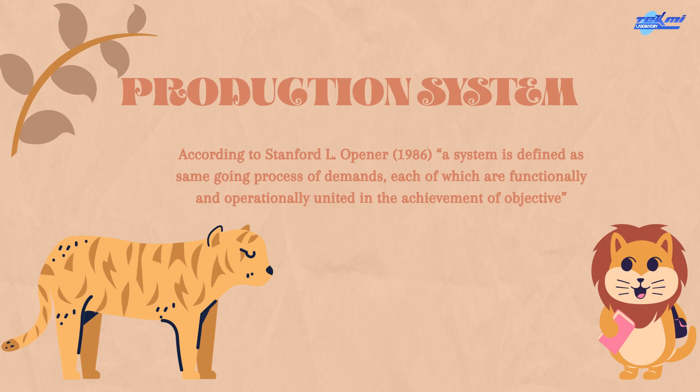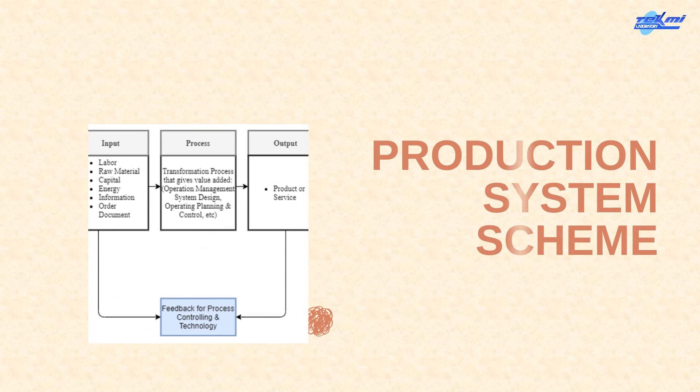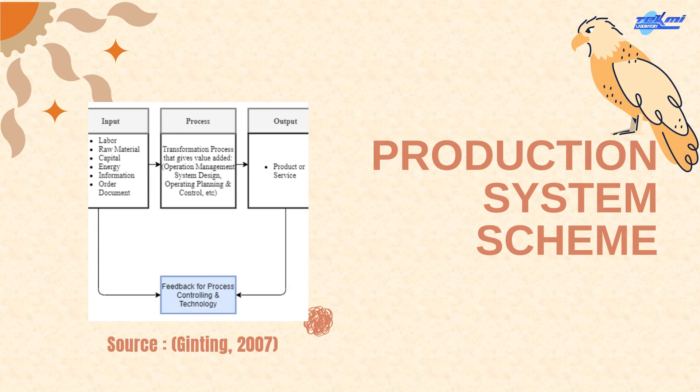Production System. According to Stanford L. Opener, a system is defined as an ongoing process of demands, each of which are functionally and operationally united in the assessment of objectives. And this is the production system schema. The input, process, and output will be used for feedback for processing, controlling, and technology.